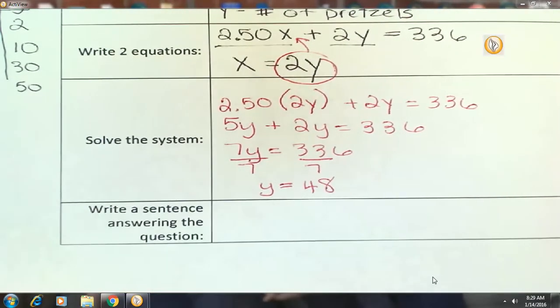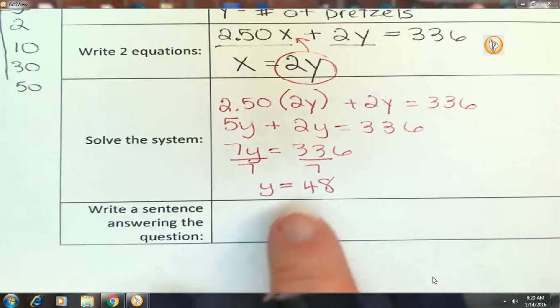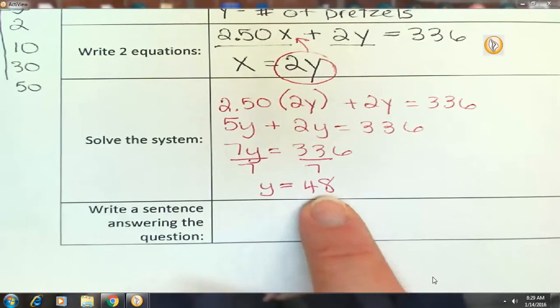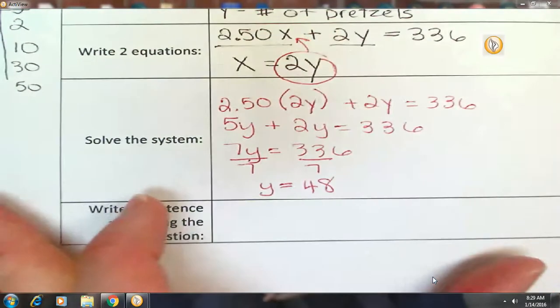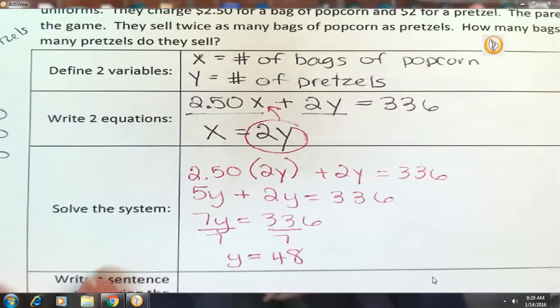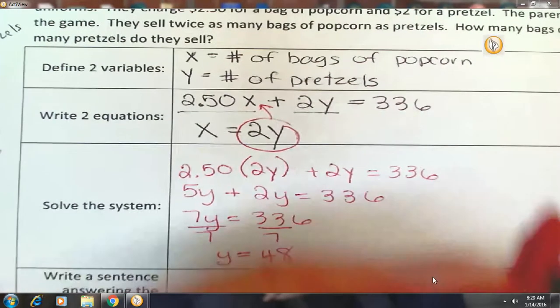Before we go any further, let's stop and make sure this seems like a reasonable answer. Y is representing the number of pretzels. Do you think that would be a reasonable answer? 48 pretzels? Very well could be.